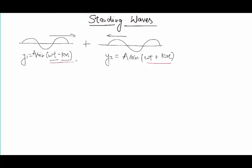So this is a rule of thumb: if the sign between omega t and kx is negative — it can be omega t minus kx, or it can be kx minus omega t — both mean that the wave is going in the positive direction. While sine of (omega t plus kx) or sine of (minus omega t minus kx), meaning if the sign between omega t and kx is the same, then the wave is going in the negative direction.